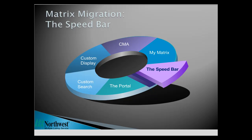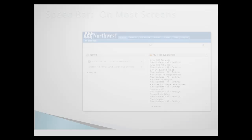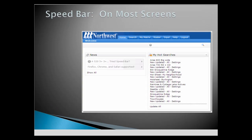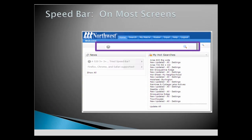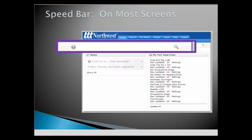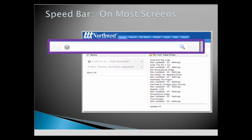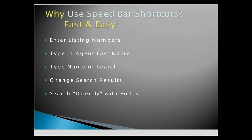The Matrix Speed Bar is a searching shortcut available on the homepage and the top of all Matrix screens. Why use the Speed Bar function? The quick answer: it's fast and easy.